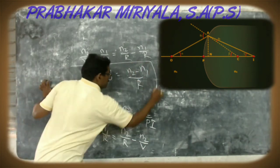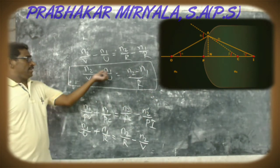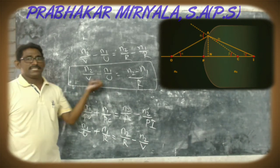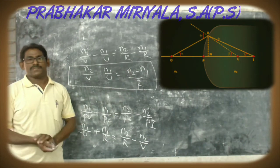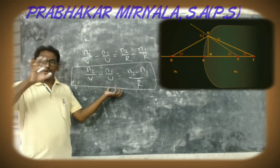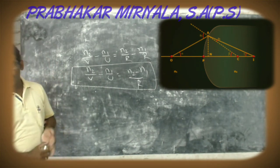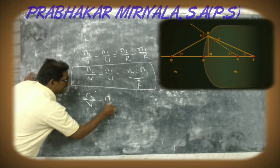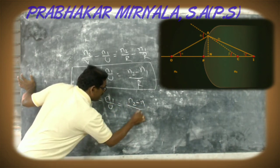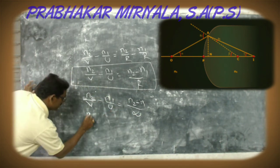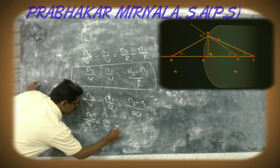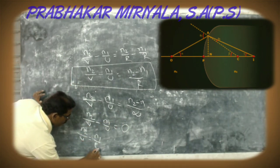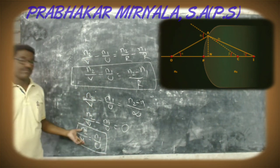This is the equation for the curved surface, where N1 and N2 are the refractive indices of the two media, U is the object distance, V is the image distance, and R is the radius of curvature. This equation is also applicable for plane surfaces. In the case of a plane surface, R becomes infinite, so N2/V minus N1/U equals (N2 minus N1)/infinity, which equals 0. Therefore, N2/V equals N1/U. This is the surface equation for the plane surface.